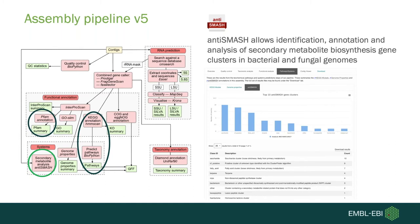Next I'll talk about antiSMASH, which is performed on quality-controlled contigs. It allows for identification, annotation, and analysis of biosynthetic gene clusters in bacterial and fungal genomes — these code for secondary metabolites and may be useful for identifying clusters with a competitive advantage. These are visualized as a bar graph showing the top 10 hits.